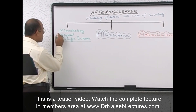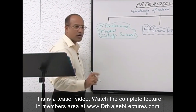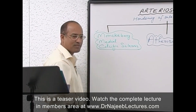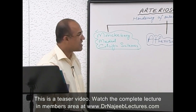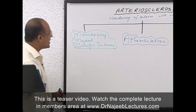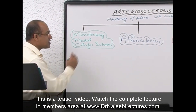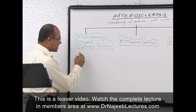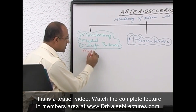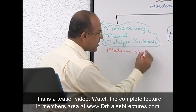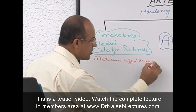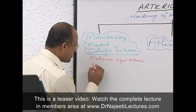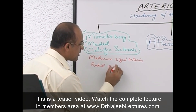First, the most benign condition — if you really want to have any one of these, pray for this one. In Monckeberg's medial calcific sclerosis, what really happens is that there is a problem involving medium-sized arteries. Common examples are radial arteries or ulnar arteries.